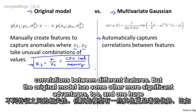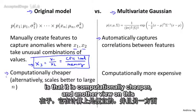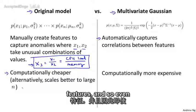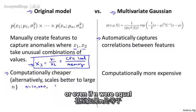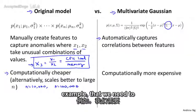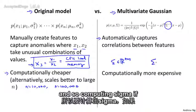The original model has other significant advantages too. One huge advantage is that it is computationally cheaper — it scales better to very large values of n, very large numbers of features. Even if n were 10,000 or even 100,000, the original model will usually work just fine. Whereas for the multivariate Gaussian model, we need to compute the inverse of the matrix sigma, which is an n by n matrix — computing that for a 100,000 by 100,000 matrix is very computationally expensive.